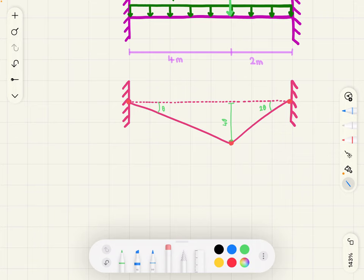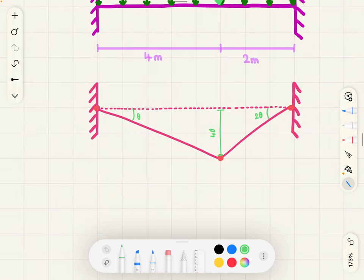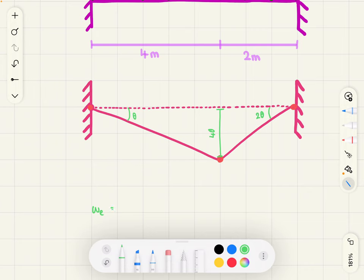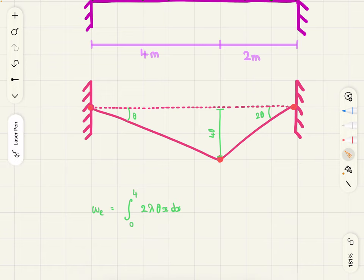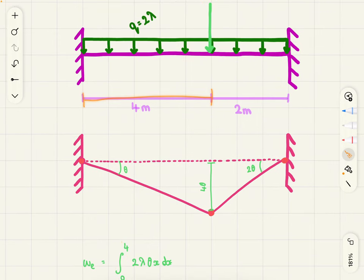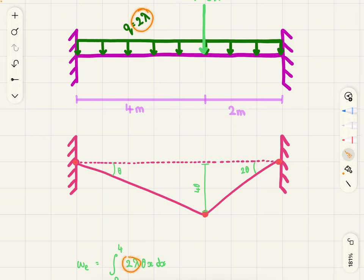Now, we're going to find the external load and internal load for this structure. So, to get the external load, we're going to integrate from 0 to 4, 2 lambda theta x dx. Now, we're integrating from 0 to 4, so this length, across this length, the load of 2 lambda, theta x is 4 theta, basically. And dx is basically the fraction of the length of x on which we are integrating the work done for.